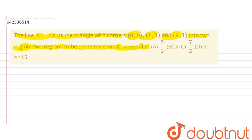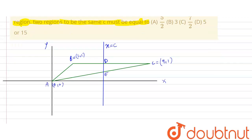So first we will draw the figure. This is my figure — this is the x-axis, this is the y-axis. These are the points and this is the triangle formed A, B, C. And this is the x equals c line which divides the triangle into two regions of equal areas.